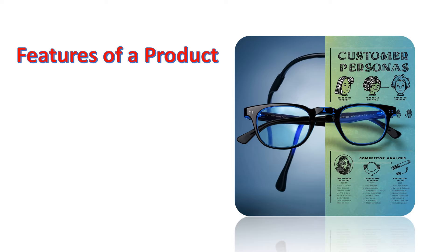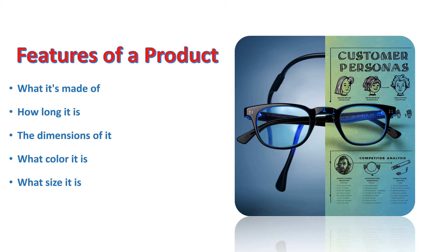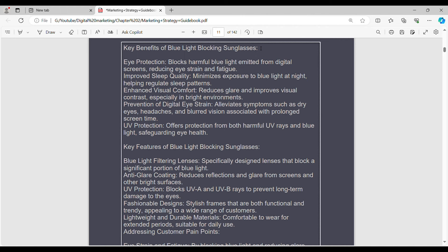A feature is not an experience. A feature is something specific about the product itself. A product feature could be what it's made of, how long it is, the dimensions of it, what color it is, what size it is, etc. Features are very specific about the product, while benefits are about what experiences the product can give the customer. In order to be effective at selling your product, you need to have a deep understanding of both the benefits and the features. The best way to get this understanding is by asking ChatGPT to make you a big, nice list of benefits and features of your specific product.